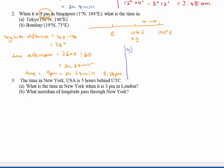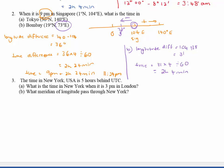For part b, Bombay is at 73 degrees east. Longitude difference: both on the same side, so 104 minus 73 equals 31 degrees. Time difference: 31 times 4 divided by 60 equals 2 hours and 4 minutes. Compared to Singapore, Bombay is in a westerly direction so we subtract time: 9 pm minus 2 hours and 4 minutes gives 6:56 pm.